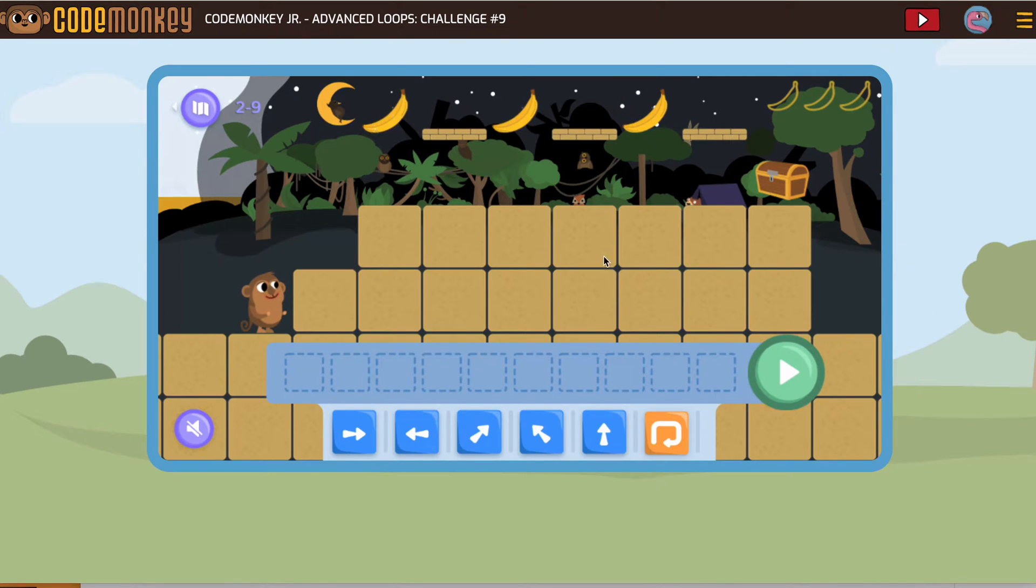When we reach advanced loops challenge number nine, this is where people start to get stuck. Not that they can't get to the treasure or collect the bananas, but they might end up with one star because they're crashing into things.